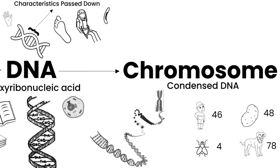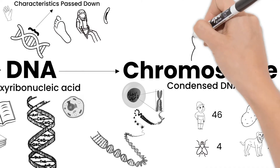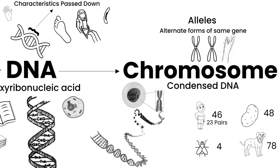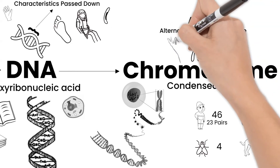All 46 of our chromosomes are in every one of our cells. Often, chromosomes are in pairs which are similar to each other. This is the case with humans — we have 23 pairs of chromosomes. Pairs will carry the same genes, just possibly in alternate forms. These alternate forms of genes are called alleles. For example, looking at a pair of chromosomes, you might have the gene to be right-handed on one, but the gene to be left-handed on the other.